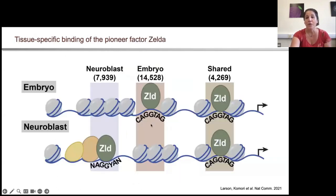What we could show is that the sites shared between tissues tended to be open and accessible promoters in both tissues, whereas the sites uniquely bound by Zelda in either the neural stem cells or the embryo were also uniquely accessible in those tissues and were correlated with enhancers that were tissue specific.